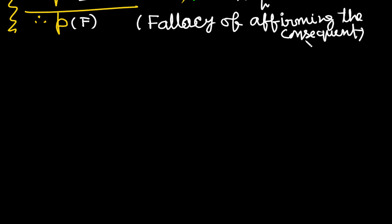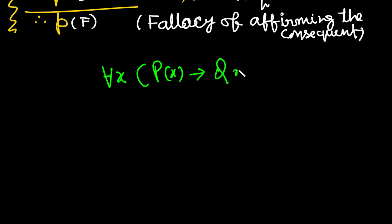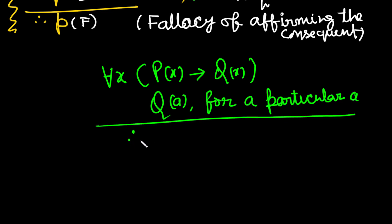The quantified version of the fallacy of affirming the consequent has the following form: Premise 1 is 'for every x, P(x) implies Q(x)'; Premise 2 is Q(a) for a particular value a; therefore P(a). This argument form is the fallacy of affirming the consequent argument form, and it is an invalid argument form.